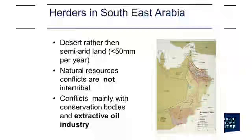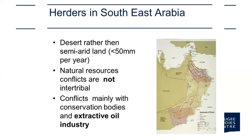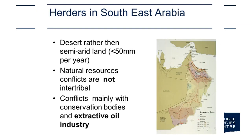The area I'm really interested in — and I'll show you a close-up — is right in the middle of the country. The Harasiis area is desert rather than semi-arid land, receiving generally less than 50mm of rain, but now suffering from extreme weather with periods of violent rain and flooding. The very sparse natural resources of this region do not give rise to conflict between tribes. Most conflicts that have emerged here have been with the extractive industry and, latterly, the conservation industry.